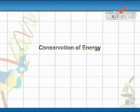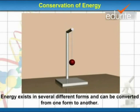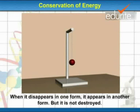Conservation of energy. Energy exists in several different forms and can be converted from one form to another. When it disappears in one form, it appears in another form, but it is not destroyed.